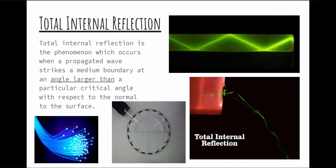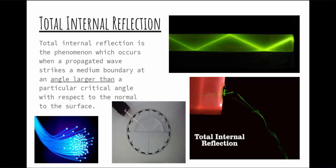Total internal reflection occurs whenever light goes from a more dense to a less dense medium. There's a point at which the light hits the surface and doesn't refract out anymore — it just stays in and reflects. This is called total internal reflection, where light bounces around inside the medium. This is what makes fiber optic cables work: when you shine light through fiber optic cables, the light stays in them regardless of how much you bend them. You have to shine it in at the very end of the cable.